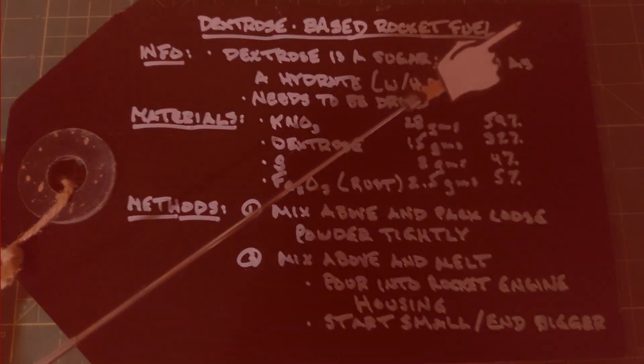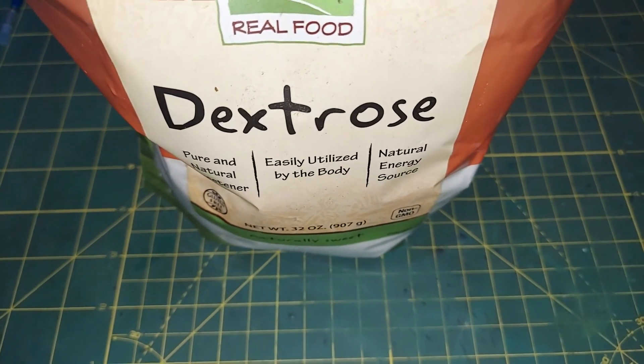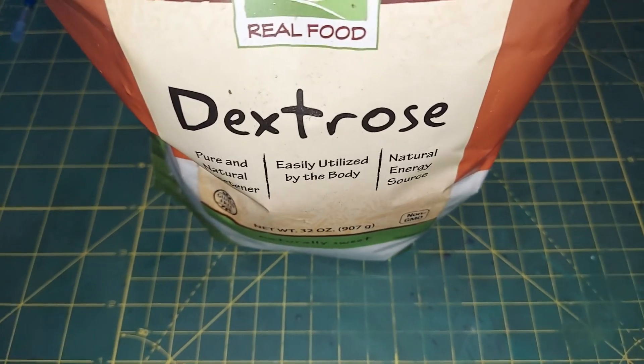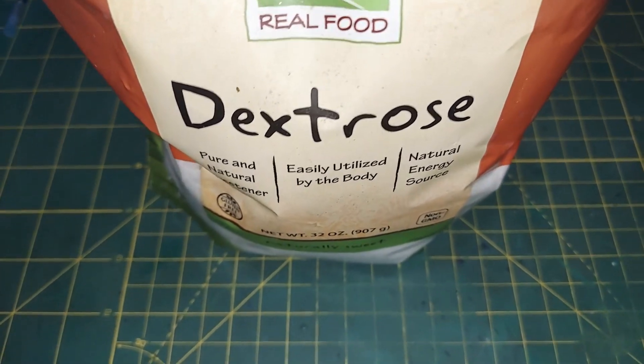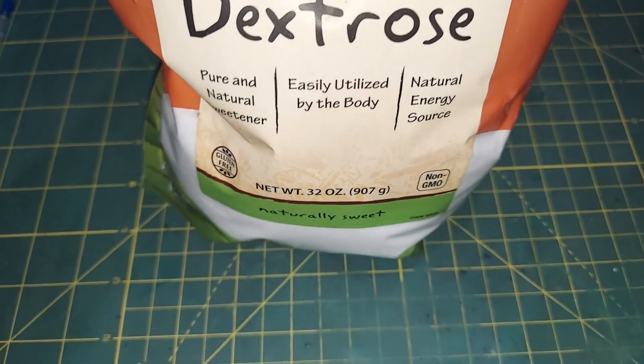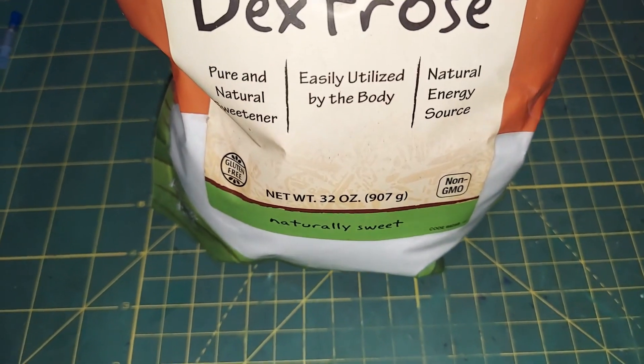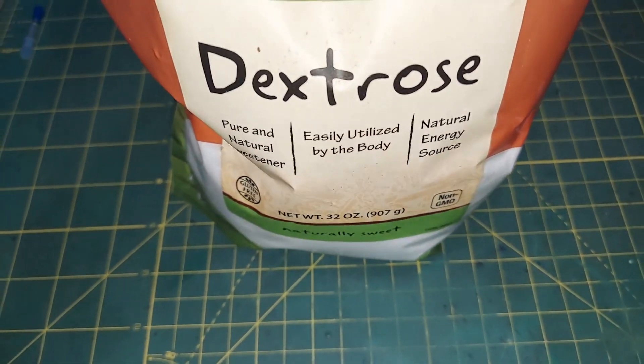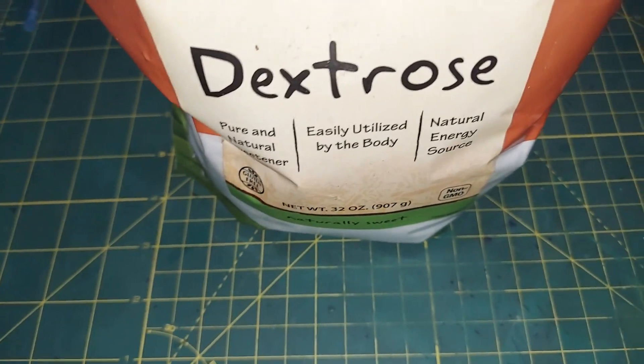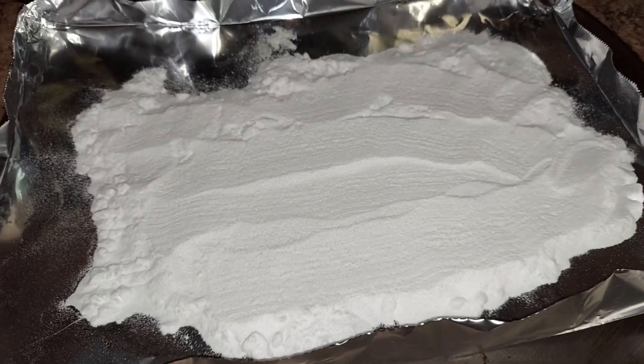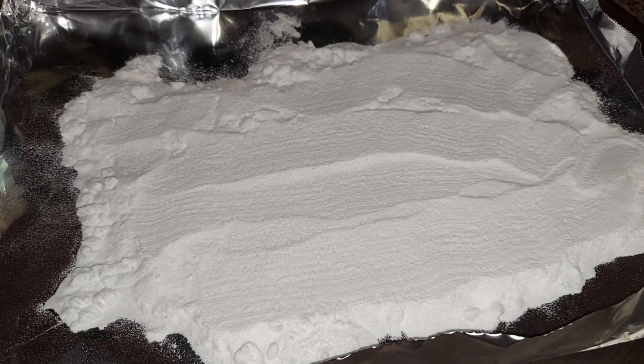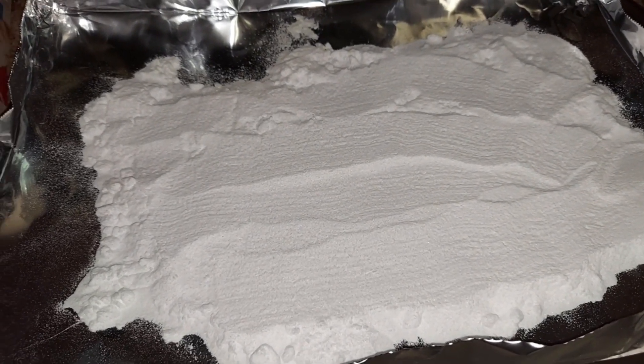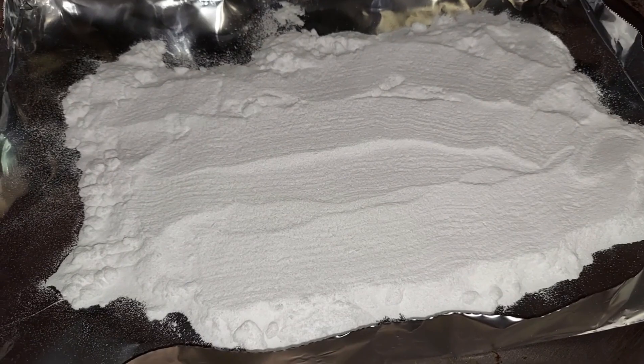To start making the dextrose-based rocket engine, we have to dehydrate the dextrose because this is dextrose hydrate. I would recommend putting about a centimeter of it on a cookie sheet and turning the heat up to 175 degrees for like an hour to an hour and a half. If you leave it out for long enough it will start to absorb moisture again from the air, so I'm going to scoop it and put it into that glass jar and seal it.